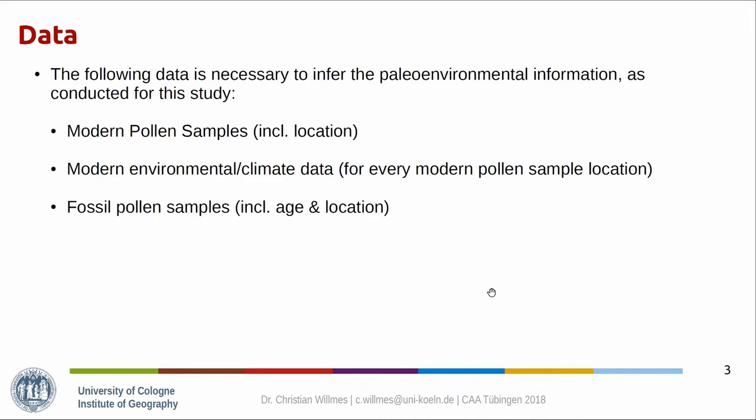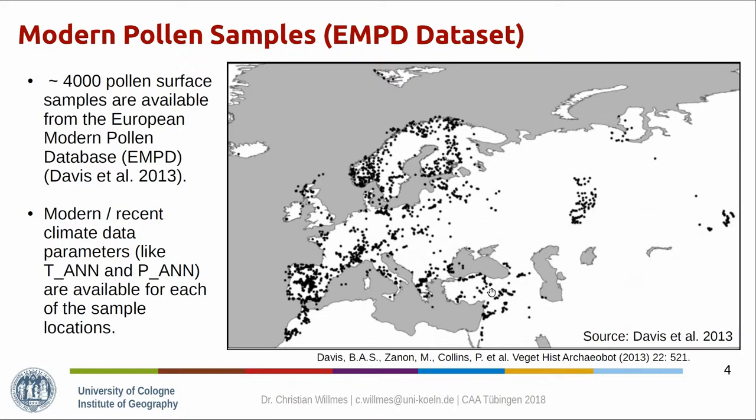We use recent pollen spectra which we can link to modern climate parameters. For this study, we concentrate on mean annual temperature and mean annual precipitation. The dataset we use for the modern pollen samples is published as open access — it's called the European Modern Pollen Database, with around 4,000 recent pollen samples distributed mostly in Europe and Eurasia, with some in northern Africa too.